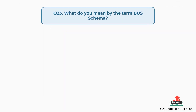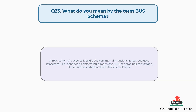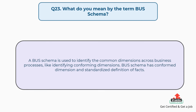Question number twenty-three: What do you mean by the term bus schema? A bus schema is used to identify the common dimensions across business processes, like identifying conforming dimensions. Bus schema has conformed dimensions and a standardized definition of facts.